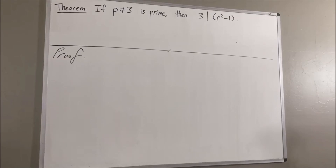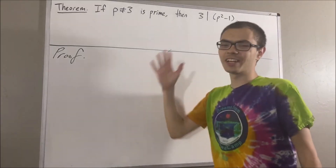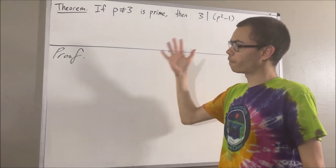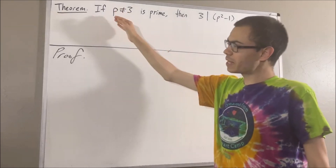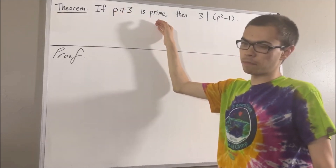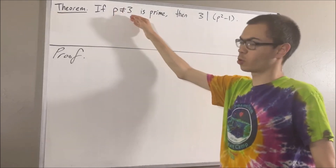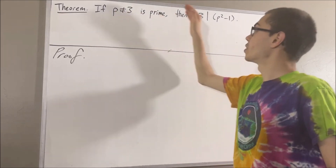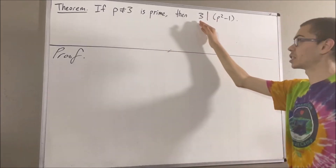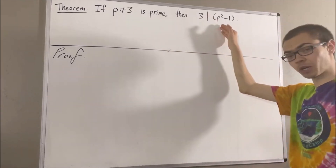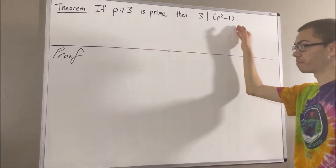Hello! In this video, we are going to prove the following theorem: if p is a prime number not equal to 3, then 3 is a divisor of p squared minus 1.